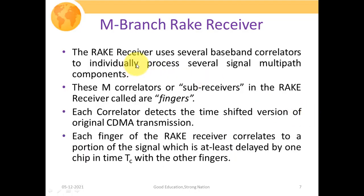The rake receiver uses several baseband correlators to individually process several multipath signal components. These M correlators or sub-receivers in the rake receiver are called fingers. Just as we use a rake gardening tool to collect grass, the rake receiver also tries to collect the actual signal from available multipaths — that is why the name rake receiver comes into picture.